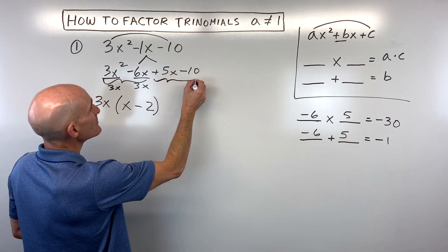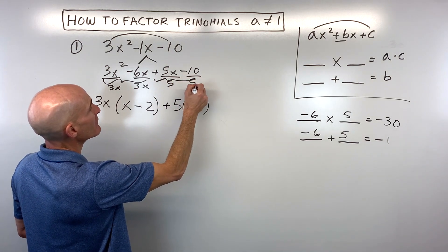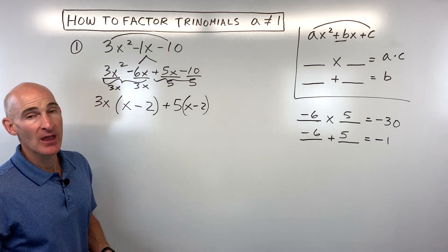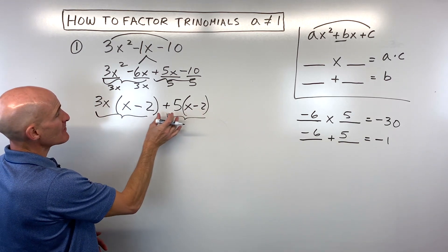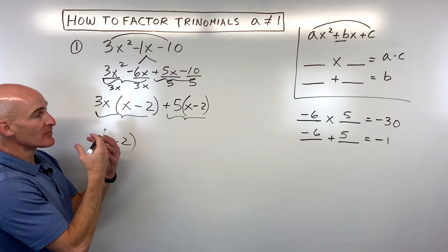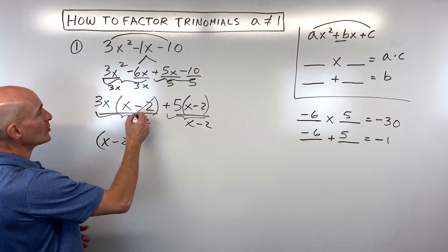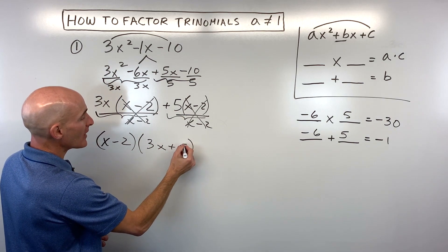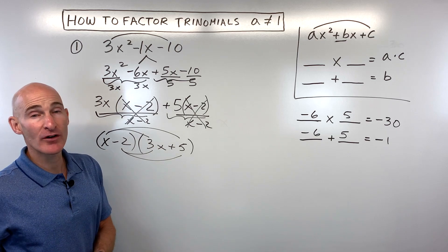For the last two terms, the greatest common factor is positive 5. Dividing both terms by 5 leaves x minus 2, since negative 10 divided by positive 5 is negative 2. Now notice that both the first group and the second group share the factor x minus 2. Factor out x minus 2 like a GCF — dividing it out of both groups — and you're left with 3x plus 5. So the factored form is (x minus 2)(3x plus 5). You can distribute twice to verify you get back the original.